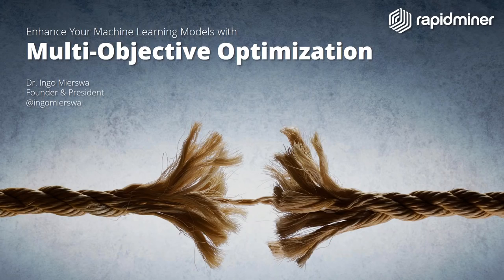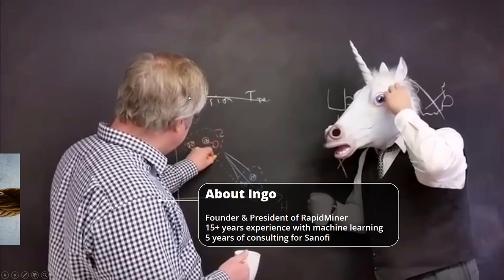I spent quite a bit of time on this topic when I was still a researcher, and I'm really happy to share some of the things I figured out back then. I hope you can make good use of this to improve your machine learning results. As Haley said, I founded RapidMiner many, many years ago. I'm still a data scientist at heart. I've tried to solve most things using data and data science methods to really get to the ground of things and figure out how we can improve our business.